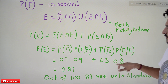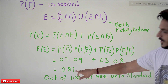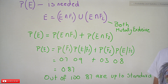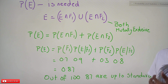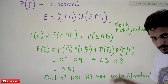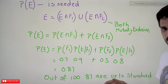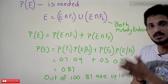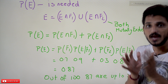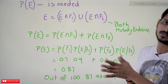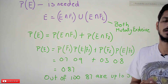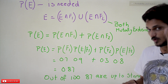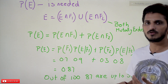When you substitute these values, the probability comes out to 0.87 — meaning 87% chance that a product from the market is a good product. On average, if you buy 100 products, 87 of them will be good products.